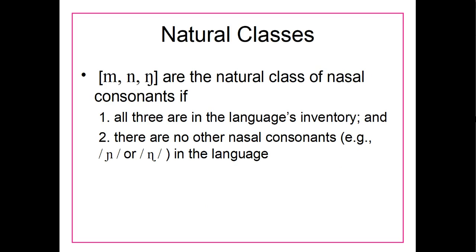One example that might be a little easier to follow if you are looking at your IPA charts. I would go ahead and bring up your IPA chart if you have it. It should be under the course material for last week. We can look at these sounds, m, n, and ŋ. Basically, these are the natural class of nasal consonants in English. The way we can justify calling them a natural class of nasal consonants in English is that, one, all three of them are in the language's inventory. All three of these are in English.